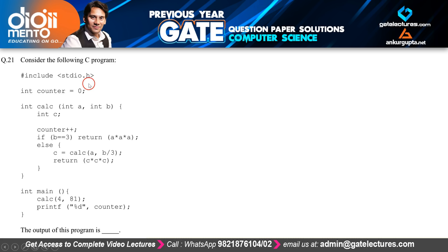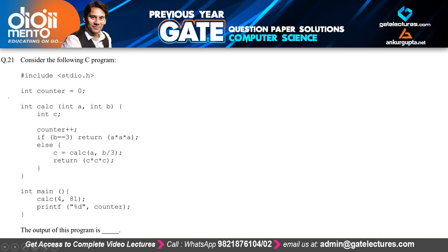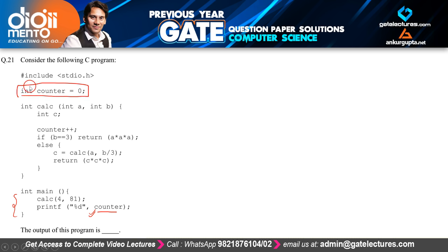In this video, let us look at questions 21 to 25, the last set of one-mark questions, then we'll come back to the two-mark questions. In question 21, they give us a C program and ask what is the output, or the value of the counter. Counter is a global variable, initially storing the value 0.